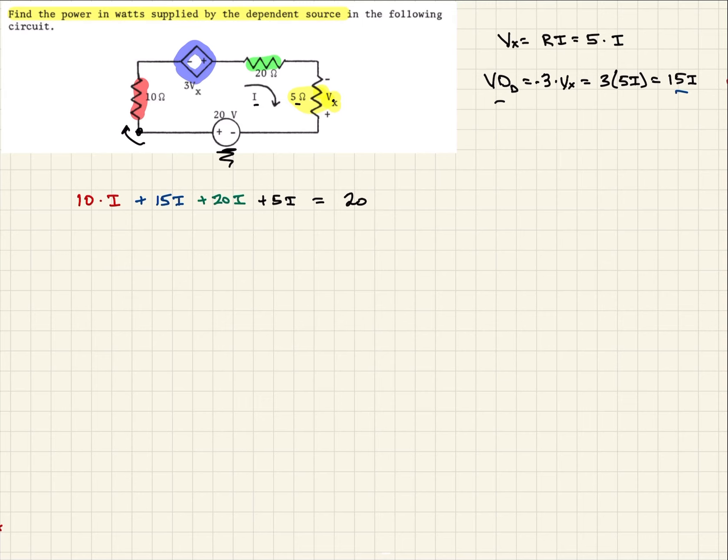Or we could have said minus 20 equals to zero, either way. So when we do that, we see that we can factor out an I. So that would be 10 plus 15 plus 20 plus 5. That's all equal to 20. And that's going to be I times 50 is equal to 20. So then I is going to be 20 over 50, which is 0.4 amps. So there's our current.